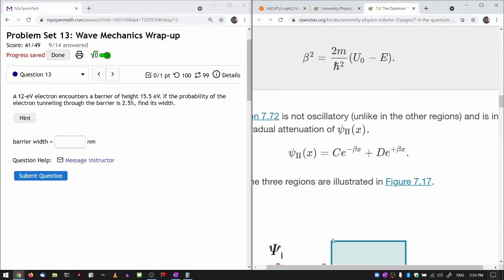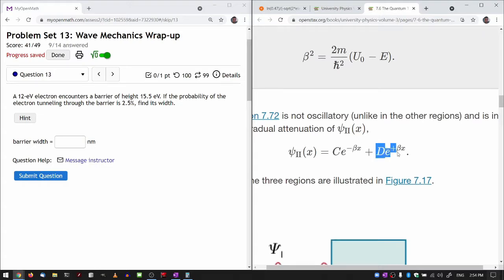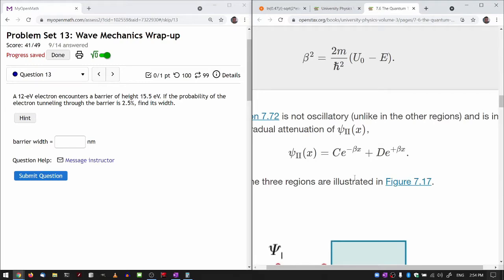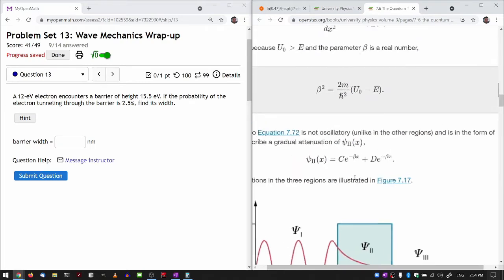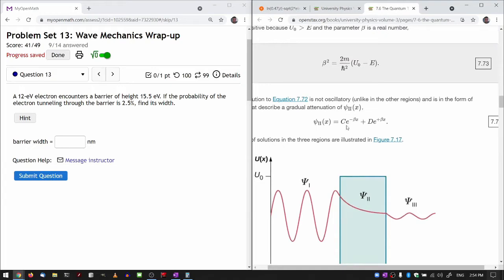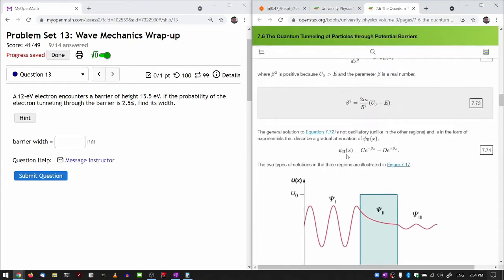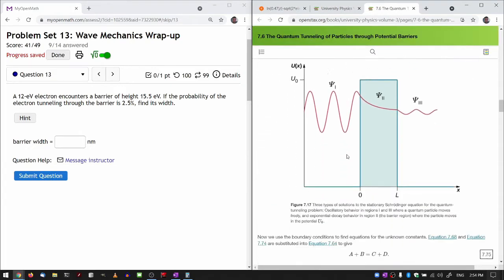When you have the finite barrier region, you cannot simply get rid of this. You have to include that, and that's what I'm referring to as reflected wave. It kind of looks like that, but anyways.